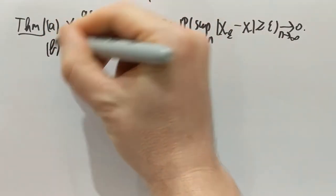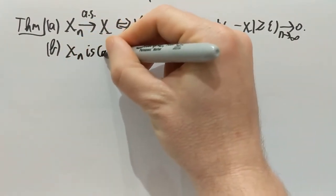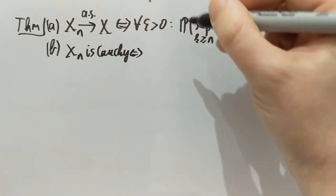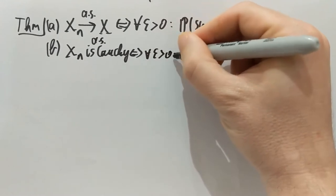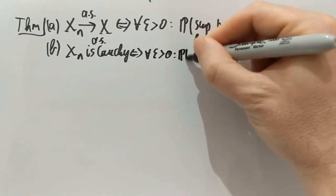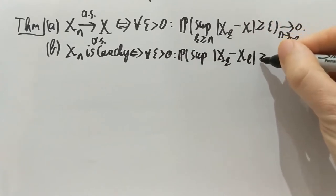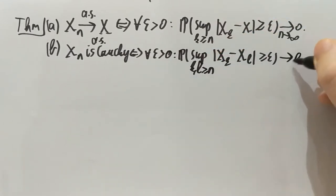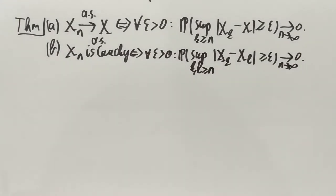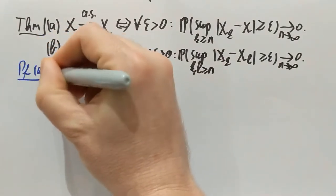Part B is very similar. It concerns Cauchy sequences. xn is almost surely Cauchy if and only if, for every positive epsilon, the probability that the supremum of |xk minus xl| over k and l at least n is bigger than epsilon goes to 0 with n. That's exactly when we have an almost surely Cauchy sequence. I'm going to prove Part A. Part B is similar and I won't do it here.